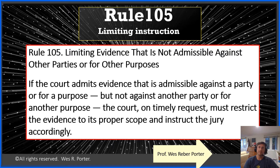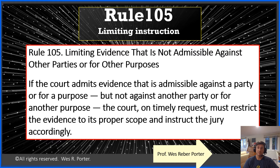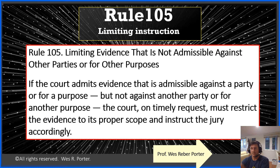So that happens a lot. And when it happens — where it's a promise by the proponent to only be used for one purpose, not the other — you have to remember Rule 105: limiting instructions or cautionary instructions. Because essentially as the opponent, it's a request to the judge: they're promising they'll only use this evidence for this good purpose. Can we tell the jury about that? 'Ladies and gentlemen of the jury, you are only allowed to consider this for this purpose — this good purpose, this acceptable purpose. You're not allowed to use it for any other purpose.' And the court actually instructs them.